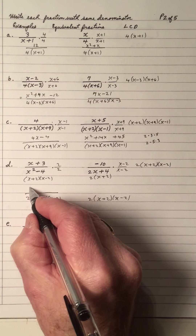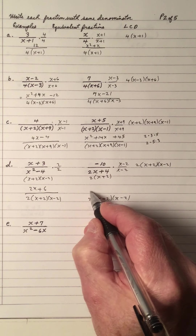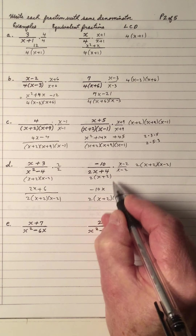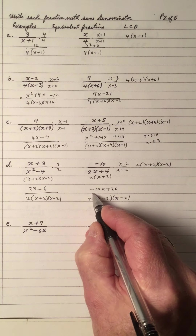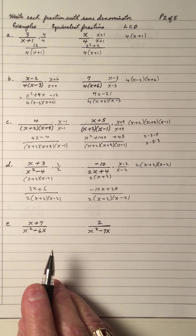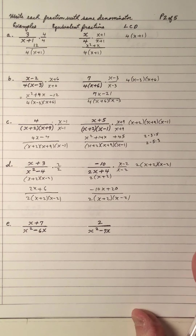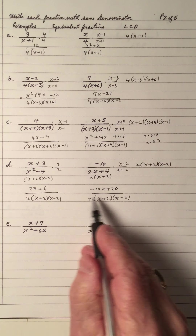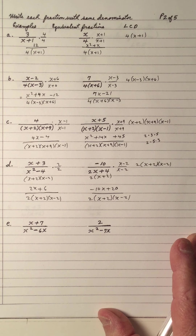Keep these the same. 2 times x plus 2 times 3; negative 10 times x plus 10 times negative 2. So now this fraction is equivalent to this one; this fraction is equivalent to this one. But both of these have the same denominator, which means you're ready to add.